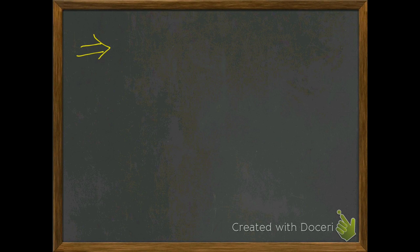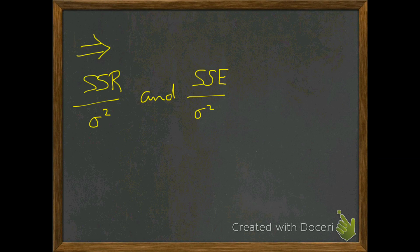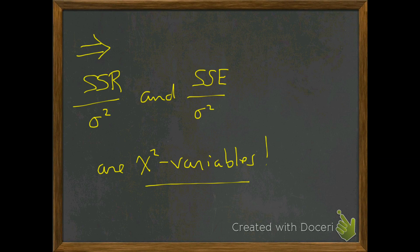I'm back. At the end of the day, since k equals 2 — we have sum of squares regression and sum of squares error — we can say that sum of squares regression over sigma squared and sum of squares error over sigma squared are chi-squared variables.